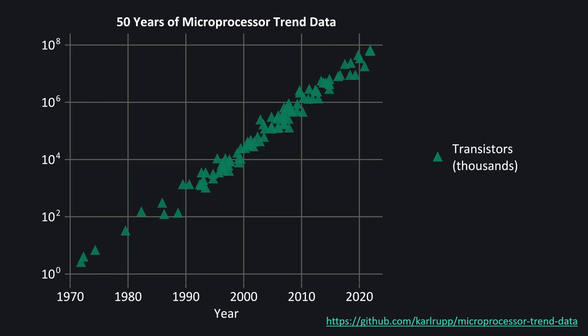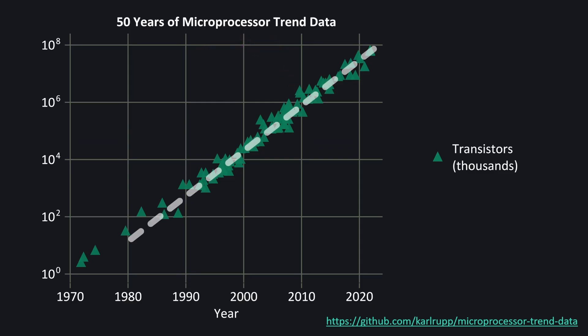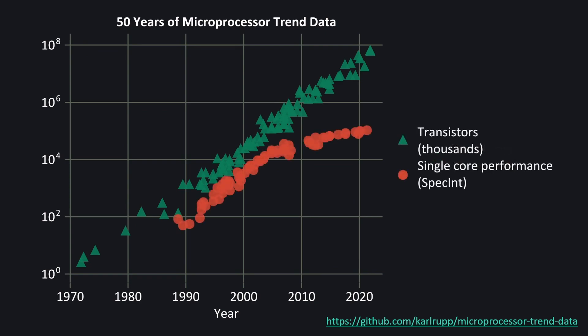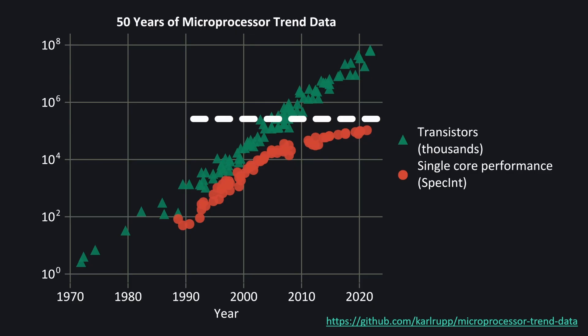This is best seen graphically. Here is a plot showing the development of microprocessors over the past 50 years. You can see that in the 1970s we only had chips with around 2,300 transistors, and by 2010 manufacturers were producing chips with billions of transistors. One thing to notice about this graph is the logarithmic y-axis — straight lines actually show exponential increases. If we now plot the performance of these chips in sequential tasks as measured by the SPEC INT benchmark, we can see that the performance increased exponentially along with the number of transistors until around the late 2000s.